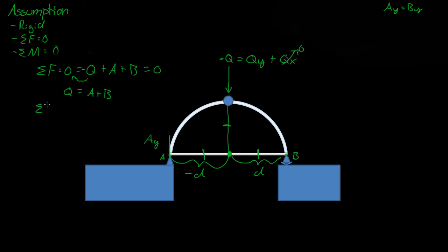So if we did the summation of the forces in the Y direction, we get zero is equal to QY plus AY plus BY. And that's negative again, so we'll do a little bit of rearrangement. QY is equal to AY plus BY.